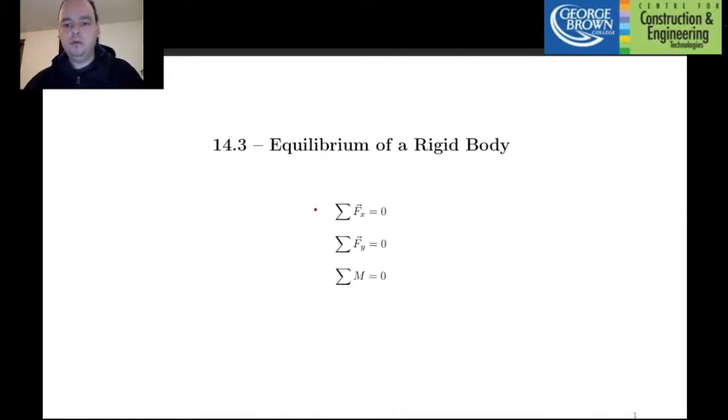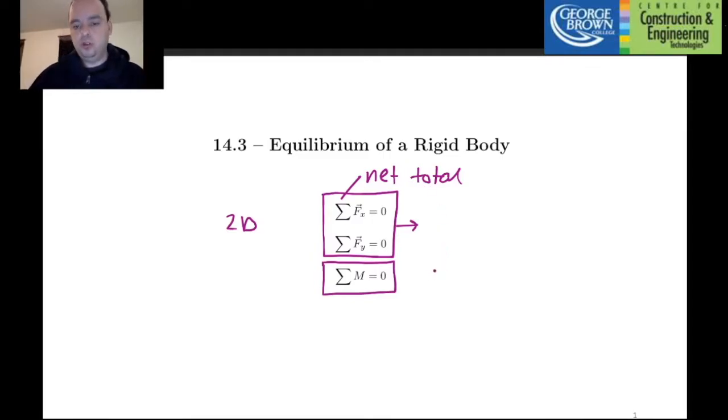Remembering from the previous video, equilibrium for a rigid body in two dimensions must satisfy the following three equations. The first two being that the net forces in the horizontal and vertical direction must be zero. Recall this sigma operator means net or total. And then we have a third condition, which is that the net moment about any point should be zero. It doesn't matter which point you choose, but it's preferable to choose a location where the most amount of unknown forces have lines of action passing through it.